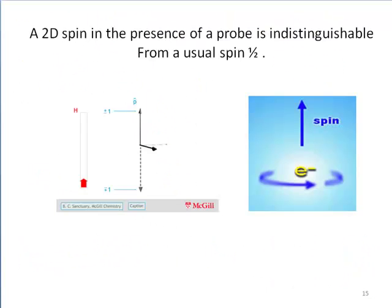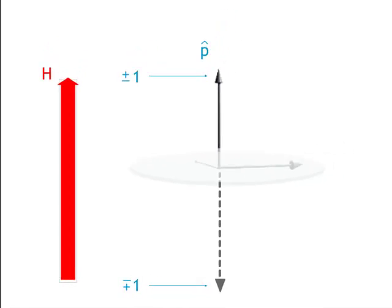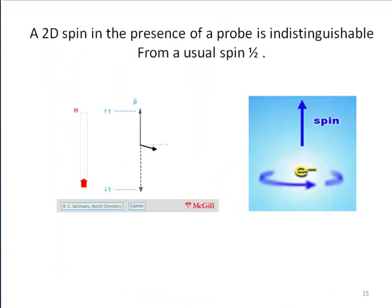However, as soon as a two-dimensional spin encounters an electromagnetic probe, one axis of the two-dimensional spin lines up with the field and the other one precesses perpendicular to it and averages to zero. It is impossible to tell the difference between the one-dimensional spin and the two-dimensional spin when a field is present.